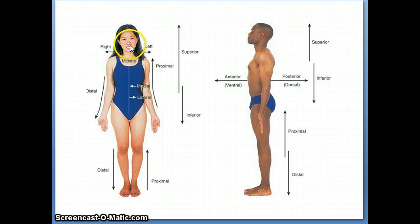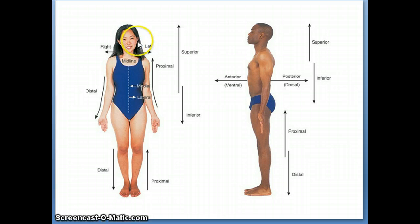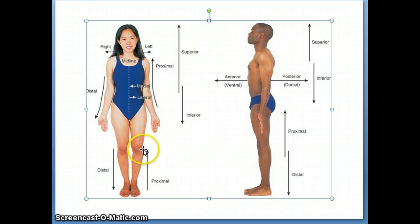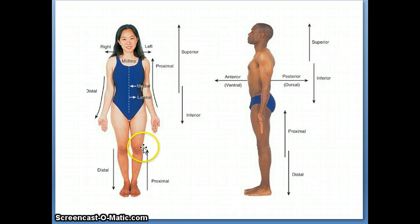For example, your nose is blank to your ear. Your nose would be medial to your ear because the nose is closer to the midline, just as the ear would be lateral to the nose because it's farther from the midline than the nose is. Another example is in the knee — there's a medial ligament and a lateral ligament. The medial ligament is going to be closer to the midline, and the lateral ligament is going to be farther from the midline.